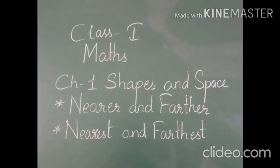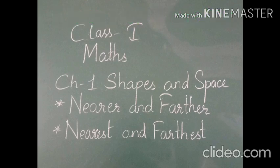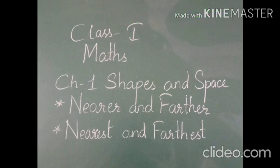Good morning students. As you all know, we have already discussed many topics from Chapter 1: Shapes and Space. Today I am going to explain another topic — nearer and farther, nearest and farthest. Near means paas and far means door. Nearer means an object which is close to another object.